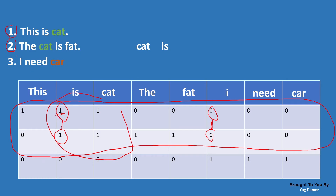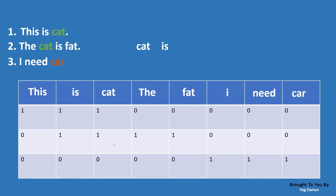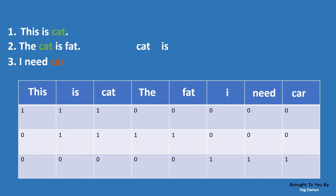If we take sentences two and three and compare them, checking through the values — zero, zero, one, zero, one, zero, one, zero, one, zero, one, zero, one, zero, zero — there is no common one-one pair in these sentences. So we can say that these two sentences are not similar at all.